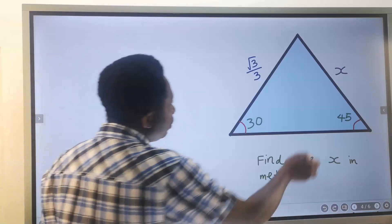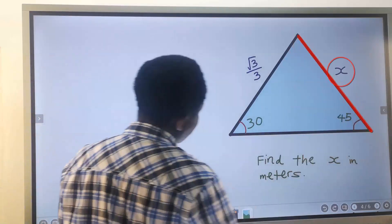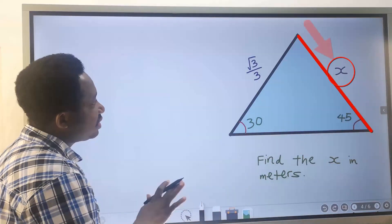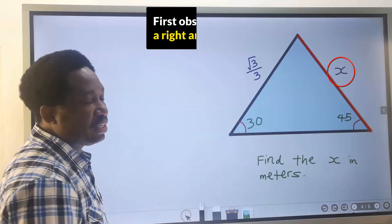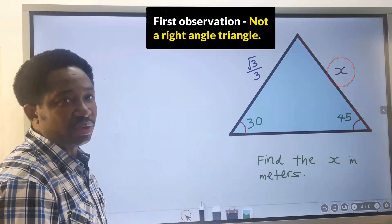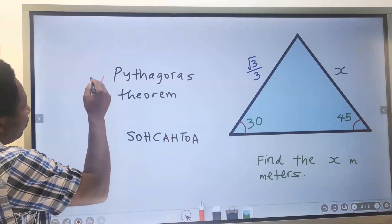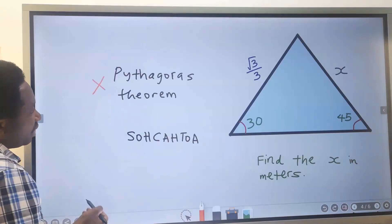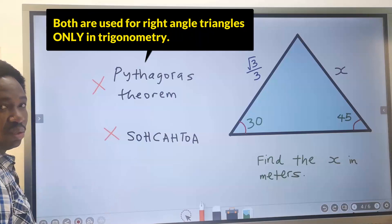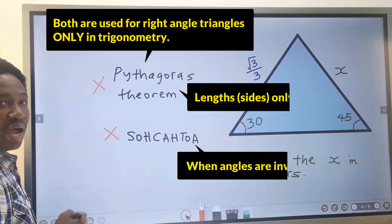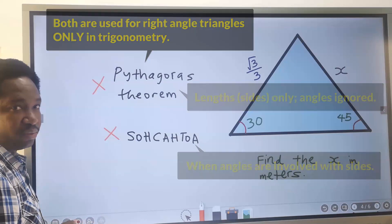Let's find the value of length x. The first thing to observe is that this is not a right angle triangle. We cannot think of Pythagoras theorem or SOH-CAH-TOA, which are usually used for a right angle triangle.